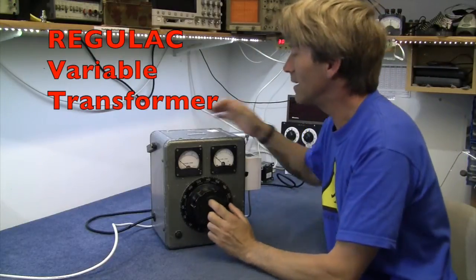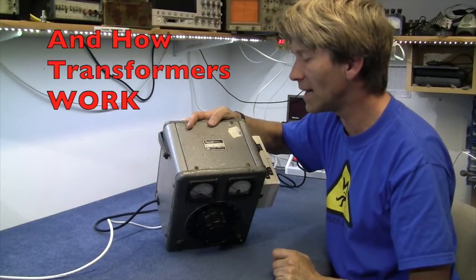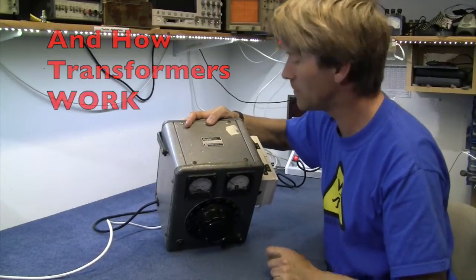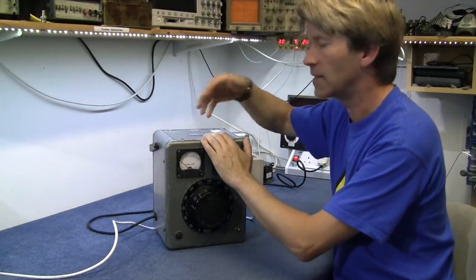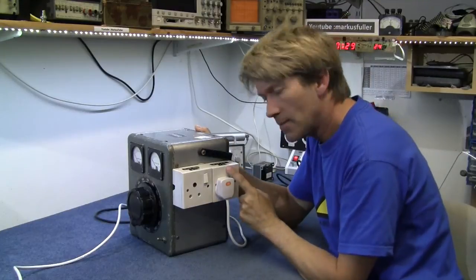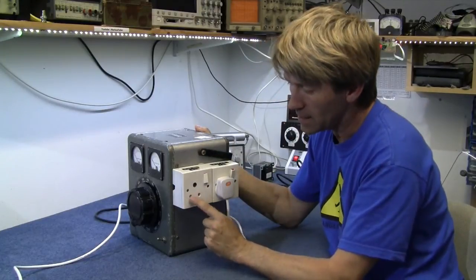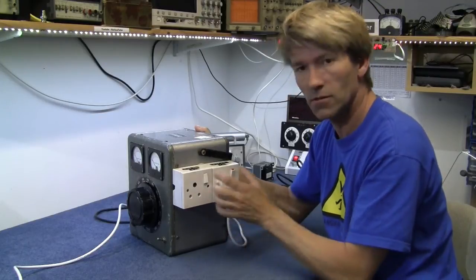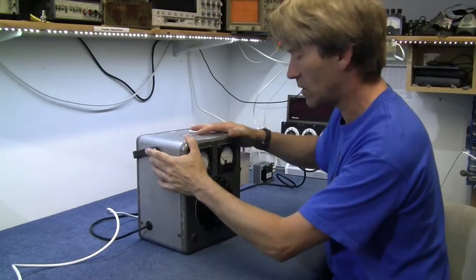Hello, another car boot find. Here is a Regulac made by Claude Lyons Limited in England. Now this is a Variac, which is a variable AC power supply, although it's got AC and it's also got 0 to 240 DC. This one's got the round pins on it so you can't sort of mix them up. Now this is a 10 amp version.